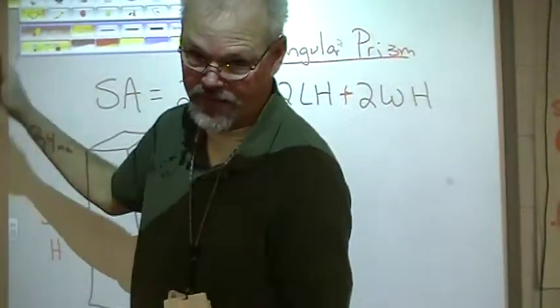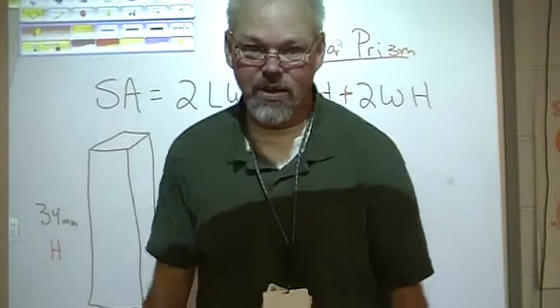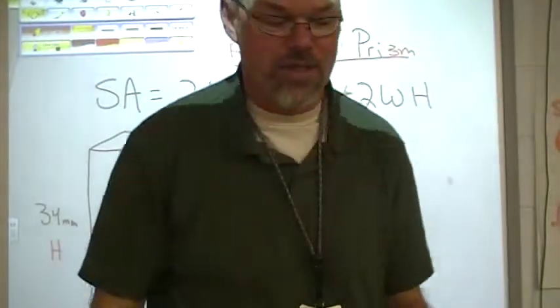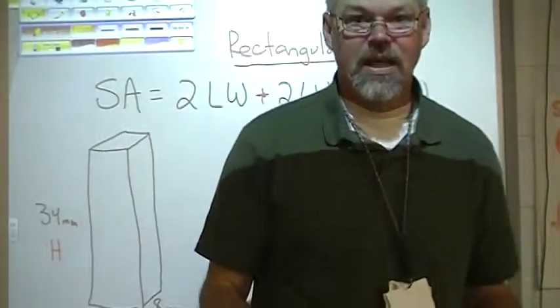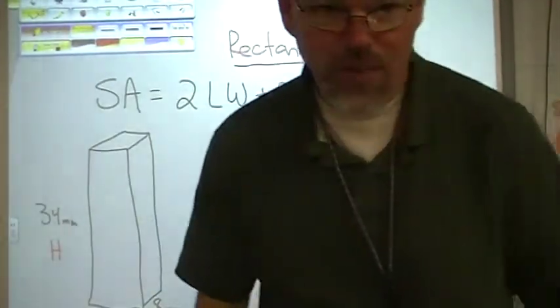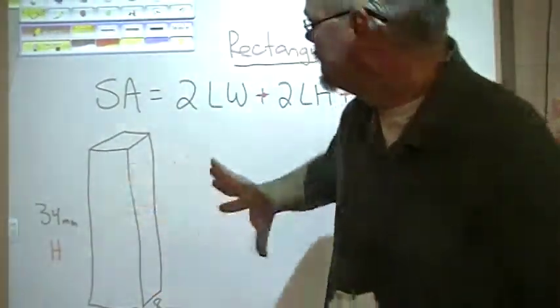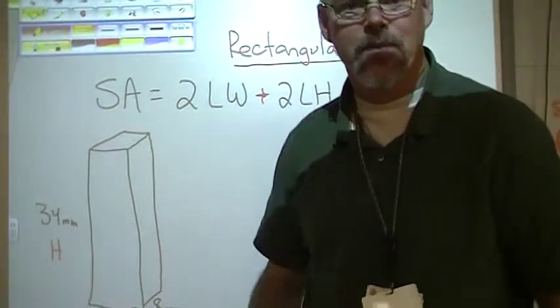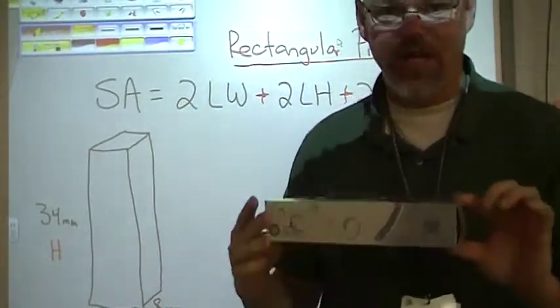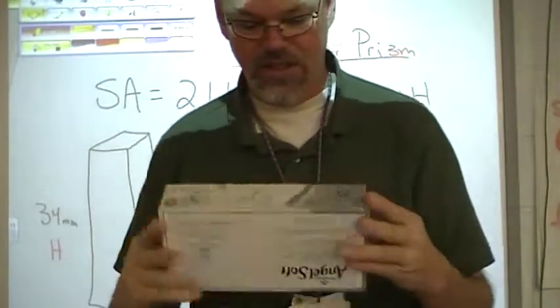Perimeter would be like this gray line all the way around it, like you're building a fence around it. But now we're talking about surface area, and the reason we're going to do this is because all the other shapes we've been looking at, you have to picture them as just flat like this board.